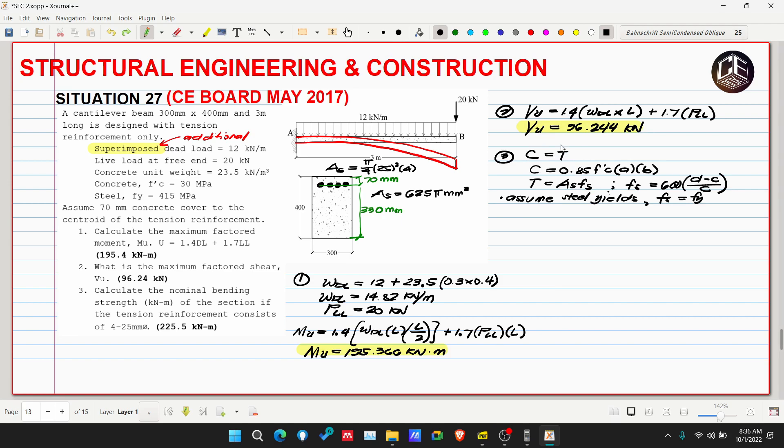Our C is equivalent to 0.85 F'c multiplied by A multiplied by B. Our B is 300, equals As multiplied by Fy. Let's solve for A.